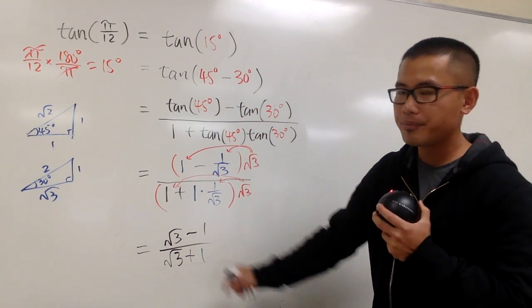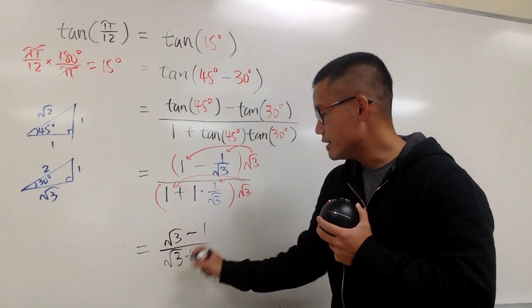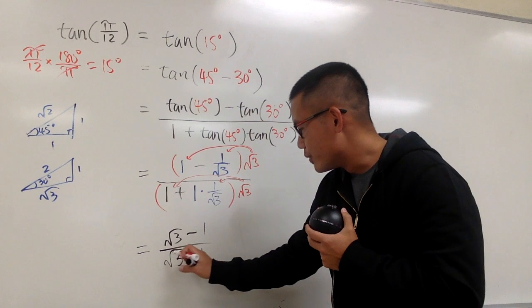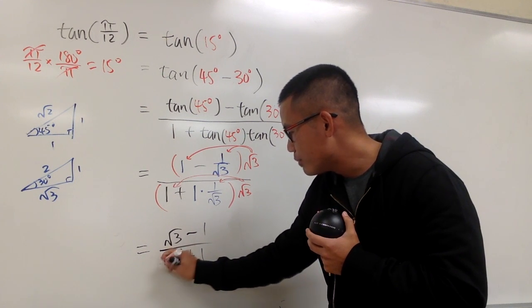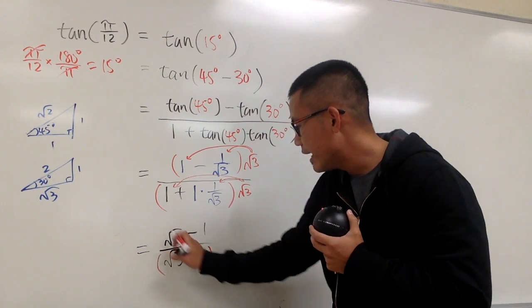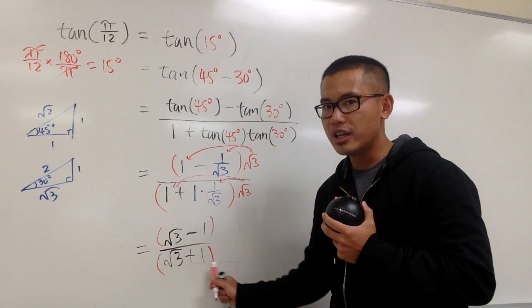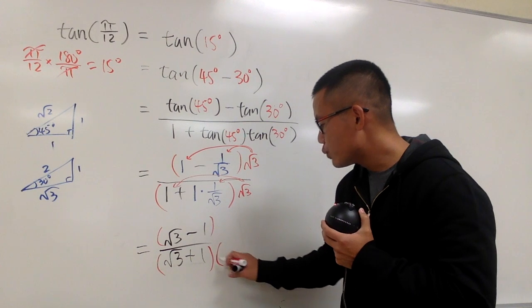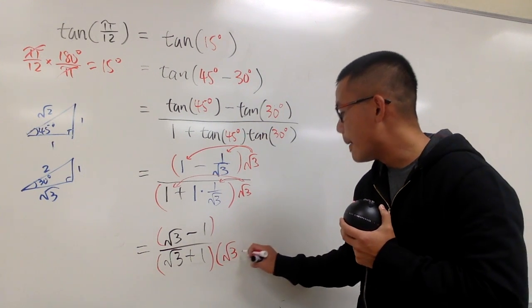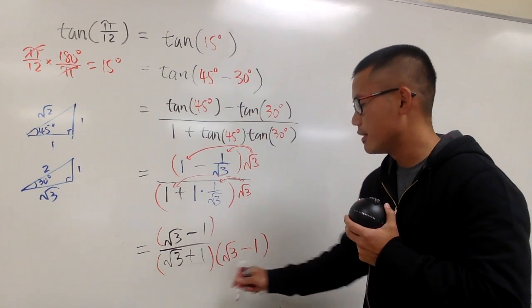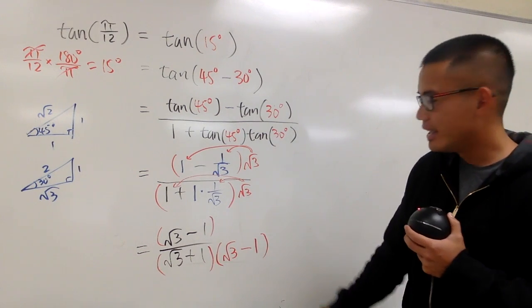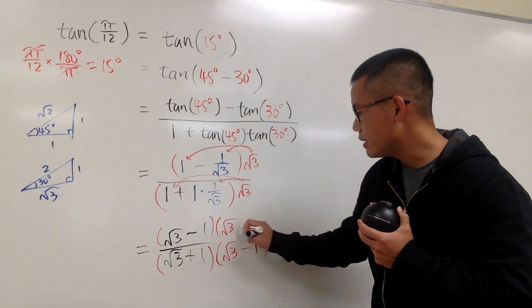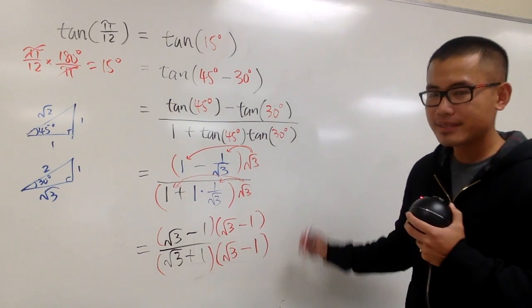Now we have square root of 3 in the denominator, so we need to rationalize it. We multiply the top and bottom by the conjugate of the denominator. The denominator is square root of 3 plus 1, so we multiply by square root of 3 minus 1 — doing the opposite sign in the middle — on both top and bottom.